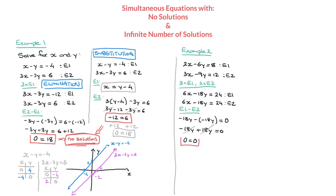That's where we stop. In this case, although 0 equals 0 is perfectly true, when we first see this we may be a bit confused. But what this result means is that this pair of simultaneous equations has an infinite number of solutions.